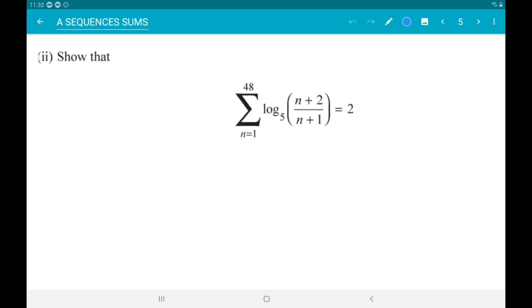To show the sum from n equals 1 to 48 of log base 5 of n plus 2 over n plus 1 is equal to 2. Alright, so let's write down some terms in this sequence. So we can say the sum to 48.